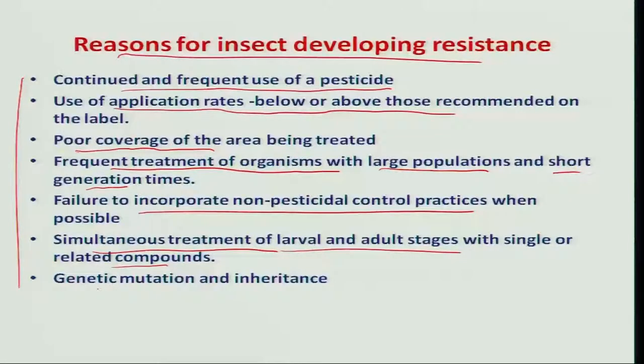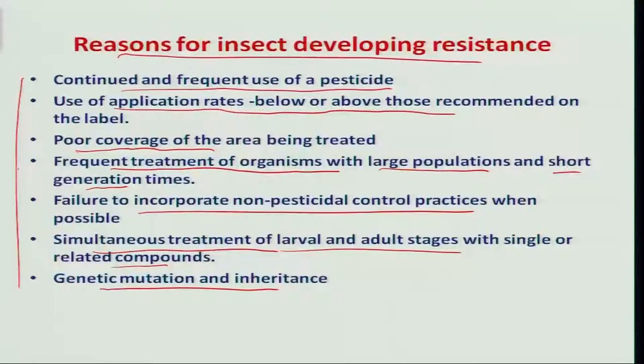Lastly, the insect is also a living organism — genetic mutation and inheritance take place. Because of continuous exposure, there is genetic imbalance and physiological adaptation; various biochemical mechanisms that insects develop to detoxify the toxic compounds of insecticides. These are the major reasons why insects develop resistance.